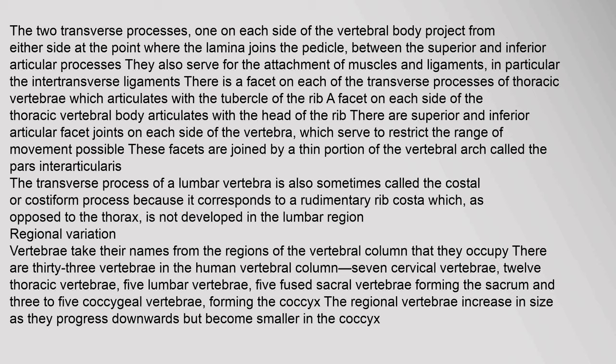The two transverse processes, one on each side of the vertebral body, project from either side at the point where the lamina joins the pedicle. Between the superior and inferior articular processes, they also serve for the attachment of muscles and ligaments, in particular the intertransverse ligaments. There is a facet on each of the transverse processes of thoracic vertebrae which articulates with the tubercle of the rib. A facet on each side of the thoracic vertebral body articulates with the head of the rib. There are superior and inferior articular facet joints on each side of the vertebra, which serve to restrict the range of movement. These facets are joined by a thin portion of the vertebral arch called the pars interarticularis. The transverse process of a lumbar vertebra is also sometimes called the costal or costiform process.